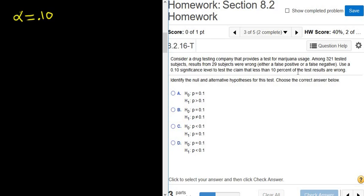To test the claim that less than 10% of the results are wrong. So this is a hypothesis test for a percentage, so we need n and x. n is the total number of observations, and x is the total number of successes. So n here is going to be 321, and then x is 29.